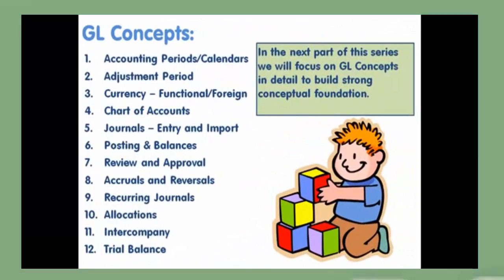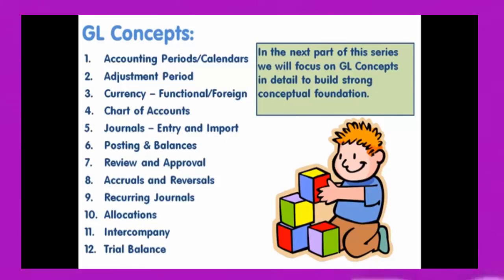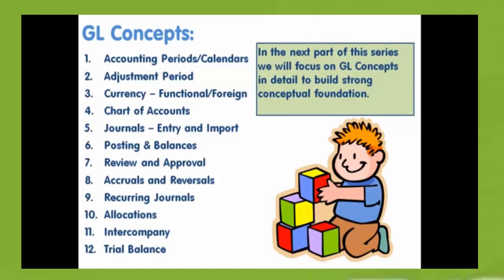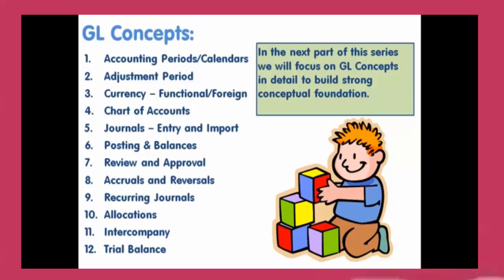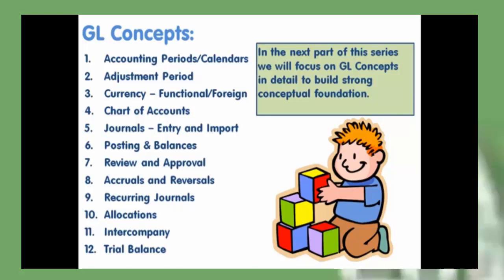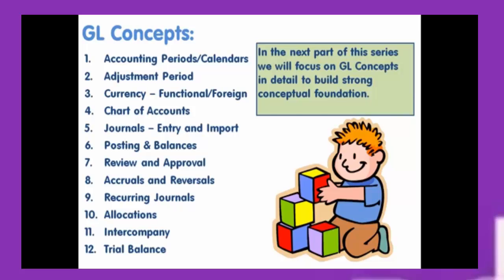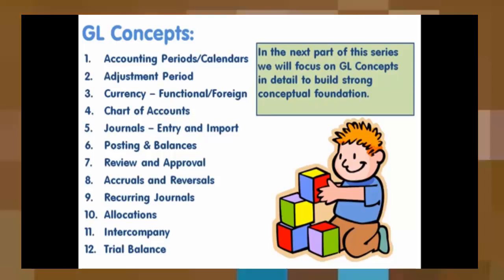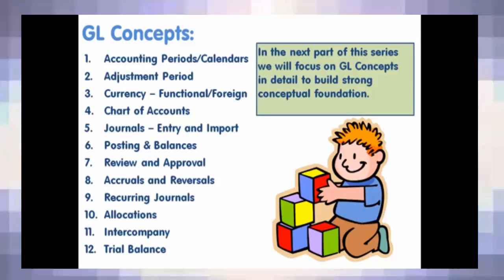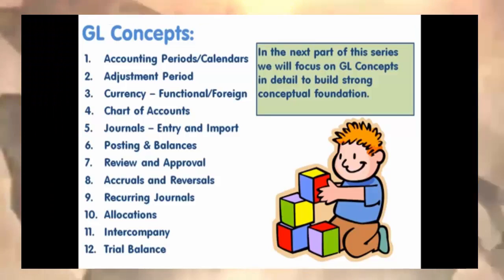GL Concepts. In the next part of the series we will focus on GL concepts in detail to build a strong conceptual foundation. The topics for the next series are: accounting periods and calendars, adjustment period, currency — functional and foreign — chart of accounts, journals entry and import, posting and balances, review and approval, accruals and reversals, recurring journals, allocations, intercompany, trial balance. Next in series — Process area: Finance, Chapter: General Ledger. Thank you.